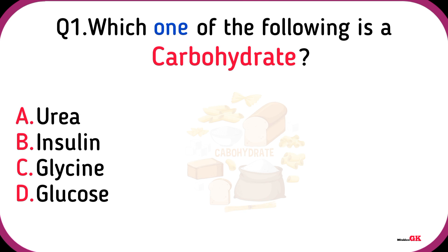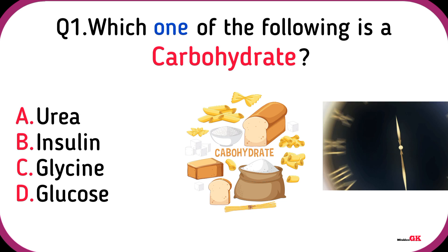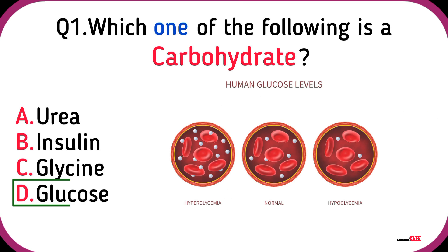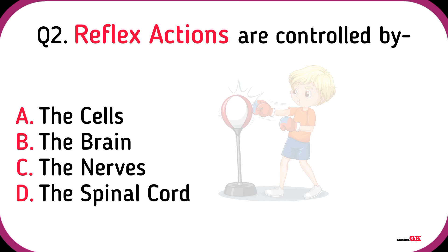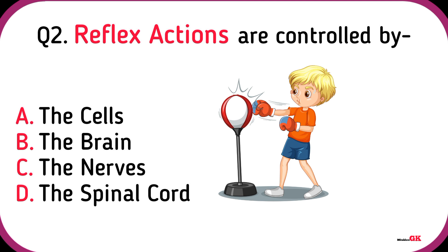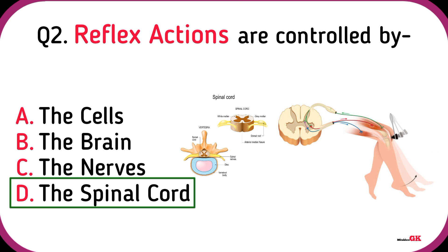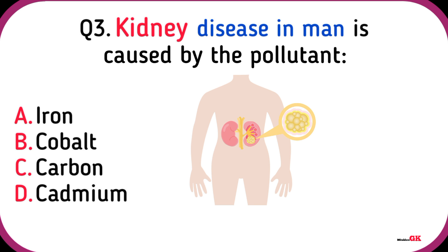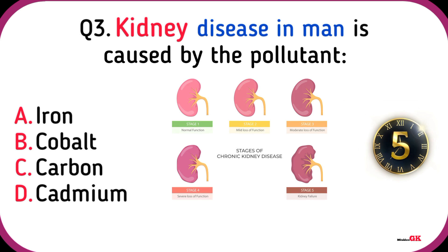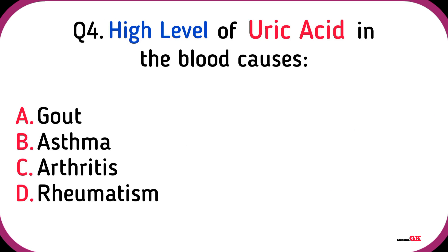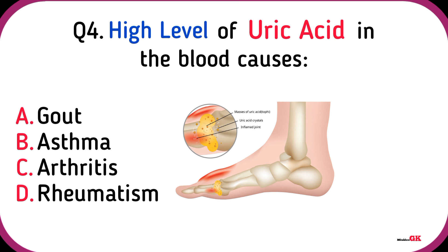Which one of the following is a carbohydrate? Glucose. Reflex actions are controlled by the spinal cord. Kidney disease in man is caused by the pollutant cadmium.